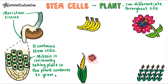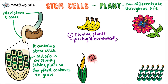Because plant stem cells can differentiate into all cell types even in adulthood, we can use them to clone plants, and this has got some real advantages. Using stem cells to clone plants is very quick and economical — i.e. cheaper than other methods. For example, the bananas that we eat are all cloned from a single plant. Cloning plants for commercial sale is also known as horticulture.